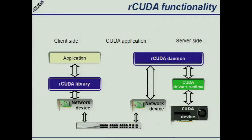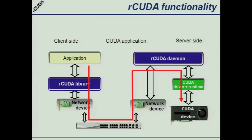What is missing is the connection. In the client side, we add the Arcuda library that replaces the CUDA library. Everything is the same from the point of view of the application — it keeps calling CUDA functions, but now they are replaced by our library. Our Arcuda library will access, through the network, the Arcuda daemon running in the server side. Once the Arcuda daemon receives requests from the Arcuda library, it will forward those requests to the real device. The application requests CUDA services to the Arcuda library, those requests are forwarded through the network to the actual device, kernels are executed there with the data, and the results come back to the Arcuda library in the client side, which delivers them to the application.